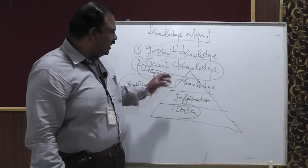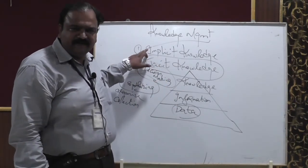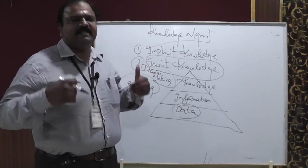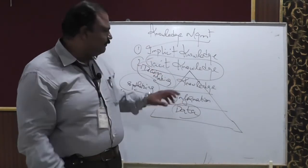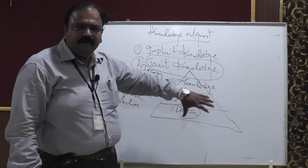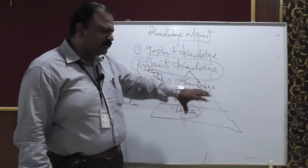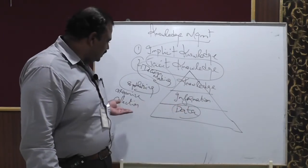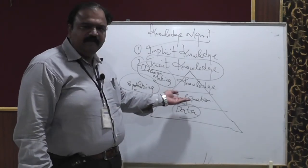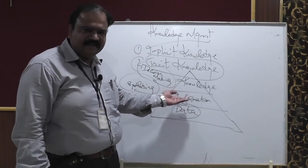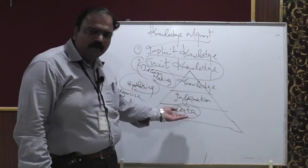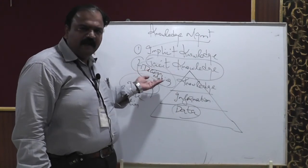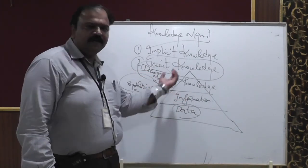In today's session we discussed implicit knowledge — the knowledge sharing that takes place within an organization — and tactic knowledge — the knowledge shared by external persons or external entities. We also covered the pyramid structure called the knowledge management process: the base is data, which is raw material for information, collected and organized by a special team. Next is information, where synthesizing converts data into meaningful information. Finally, decision making converts information into knowledge. Thank you.